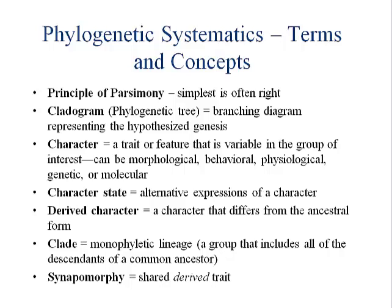A derived character is any character that differs from the ancestral form. If you see an ancestor that doesn't have the character but the species you're looking at has it, that's a derived character. A clade is any line along that tree which forms a monophyletic group — a group that contains all of the individuals in it but not individuals outside of it.